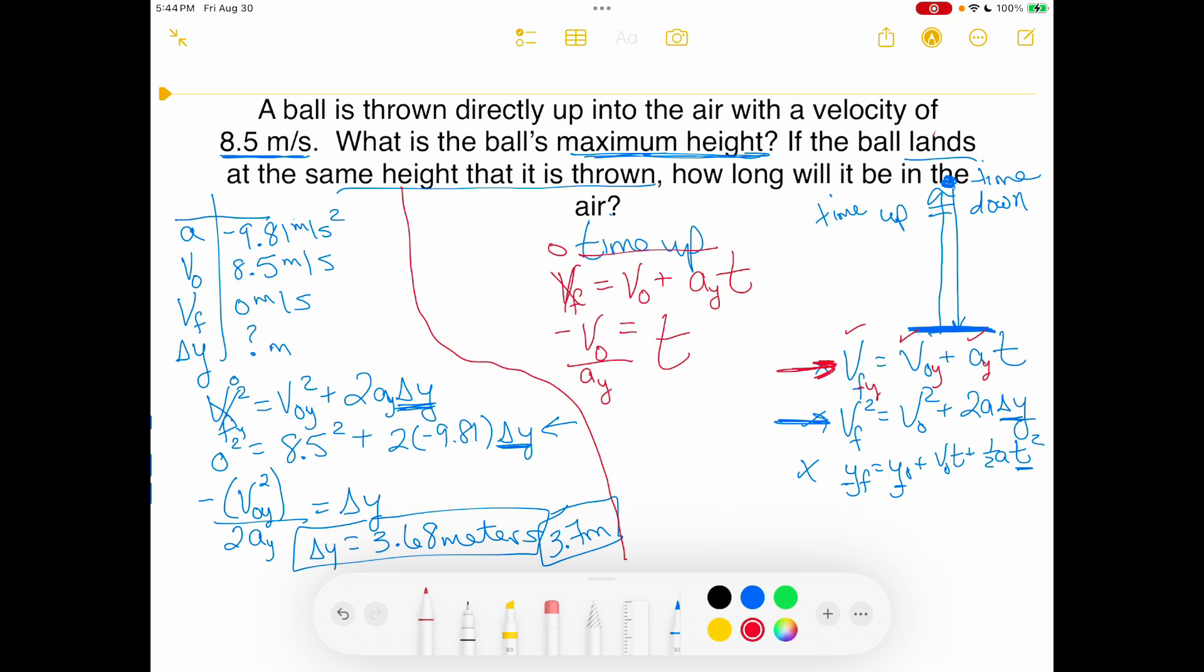If it's hard for you to see that right now, then go ahead and just write your numbers in. V final is zero. V initial is 8.5. Acceleration is negative 9.81. And you have times time and you're solving for that time. Either way, however you do it, you're going to get that time is 0.866 seconds.